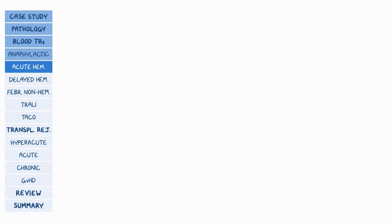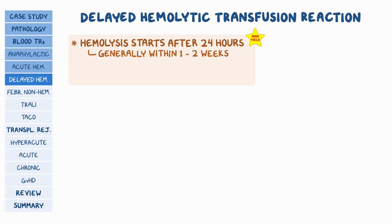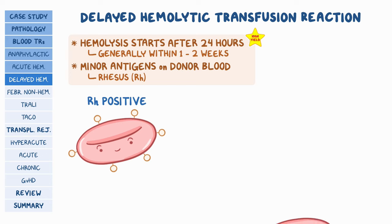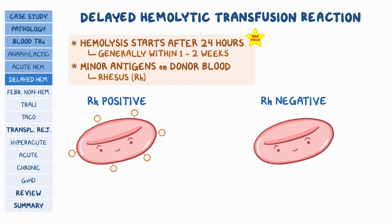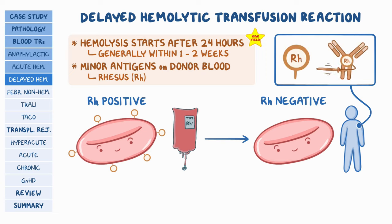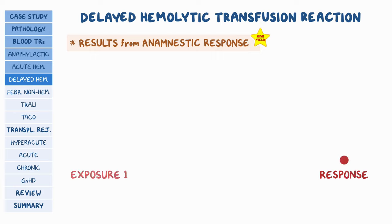There's also delayed hemolytic transfusion reaction, where hemolysis starts after 24 hours of transfusion, generally within one to two weeks. This occurs when there are antibodies against minor antigens on donor blood, such as rhesus or RH. People are either RH positive — meaning they have the RH protein on their red blood cells — or RH negative, meaning it's absent. If an RH negative person receives RH positive blood, they could develop a delayed hemolytic transfusion reaction. This reaction results from an anamnestic response: the recipient must have been previously exposed to these minor antigens through prior transfusion or pregnancy, which led to antibody development without a noticeable reaction.